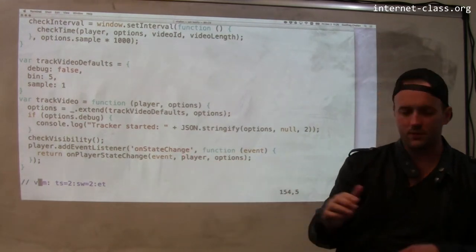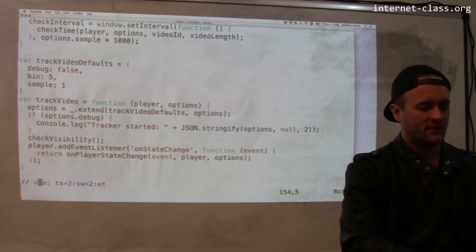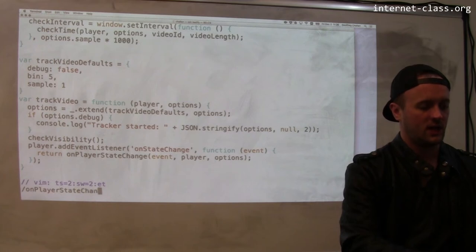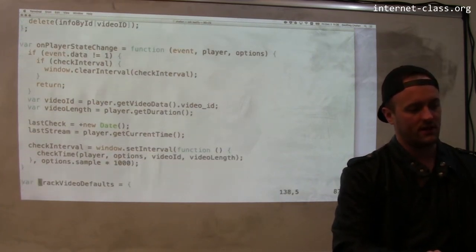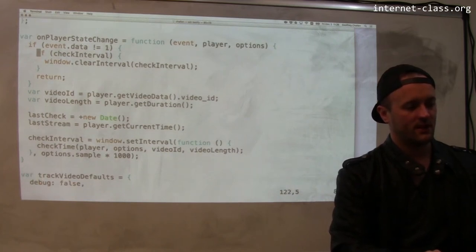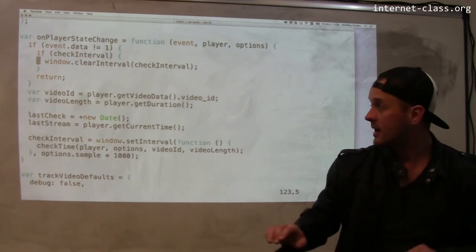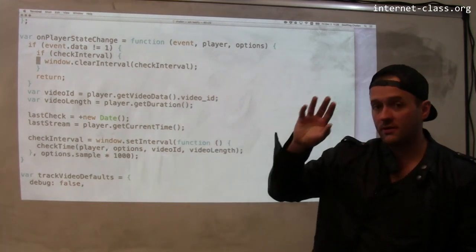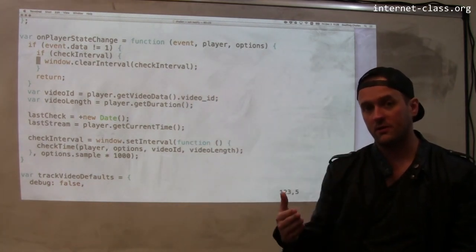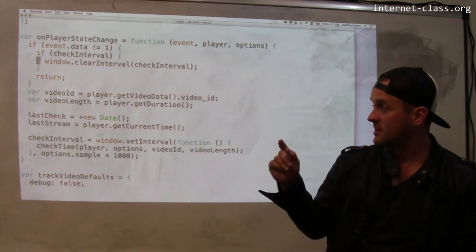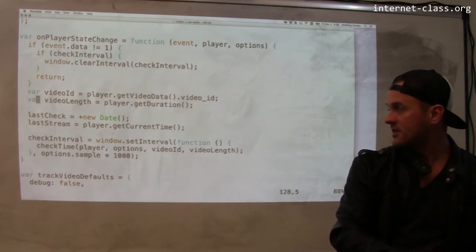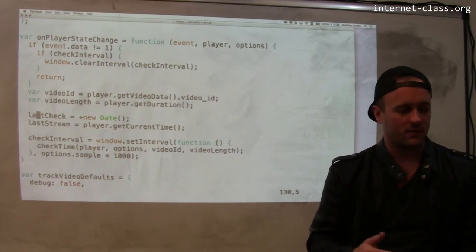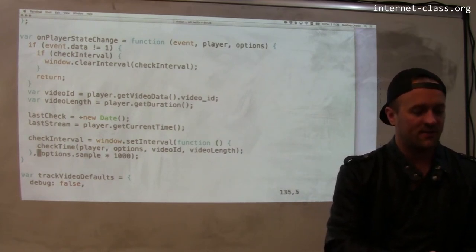And when that state changes, it'll call on player state change. I know this is all sort of complicated, but we'll get to the simple part in a sec. So what this does is if it's not playing, so event.data holds an integer that reflects what's going on. So if event.data is one, it means that the video started to play. When the video starts to play, this function sets a timer. And it's really that timer that does all the work. So this timer is set to fire every second.